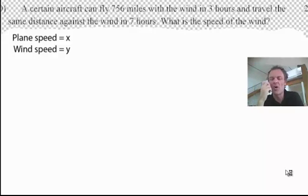We've got a plane that's going 756 miles in three hours with the wind. It's going faster with the wind. Seven hours coming back against the wind, slower against the wind. What's the speed of the wind? The speed of the wind is going to be either x or y. I'm going to call it y here. Plane speed is x and the wind speed is y.